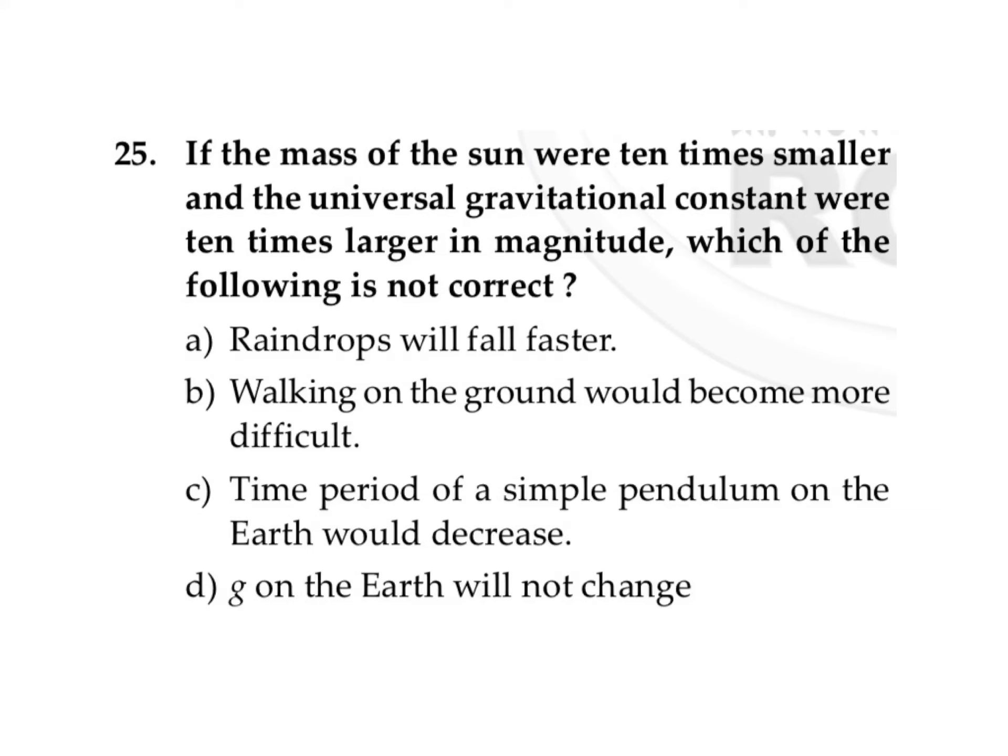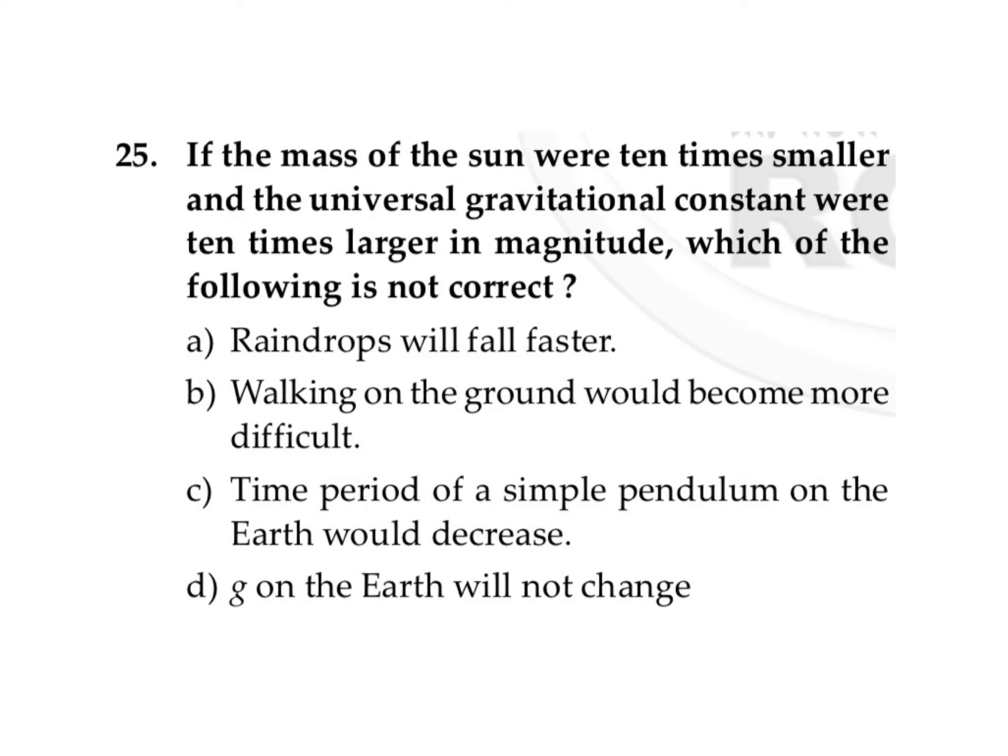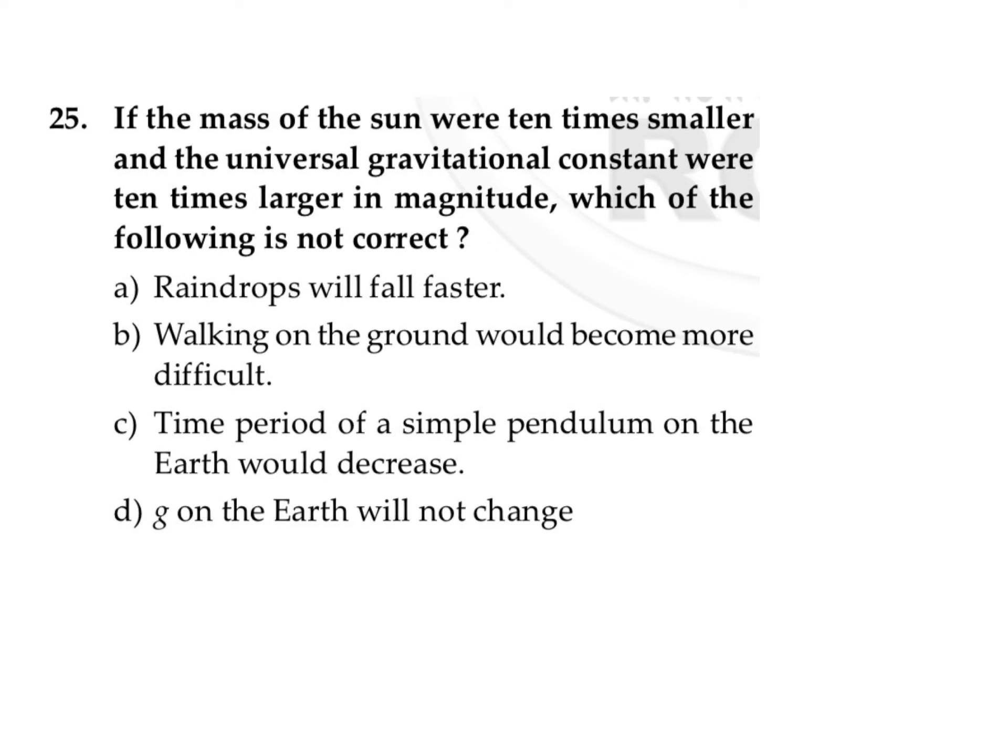If the mass of sun were 10 times smaller and the universal gravitational constant were 10 times larger in magnitude, which of the following is not correct? In the question they are asking which of the following option is not correct. They are not asking which is correct, they are asking which is not correct.